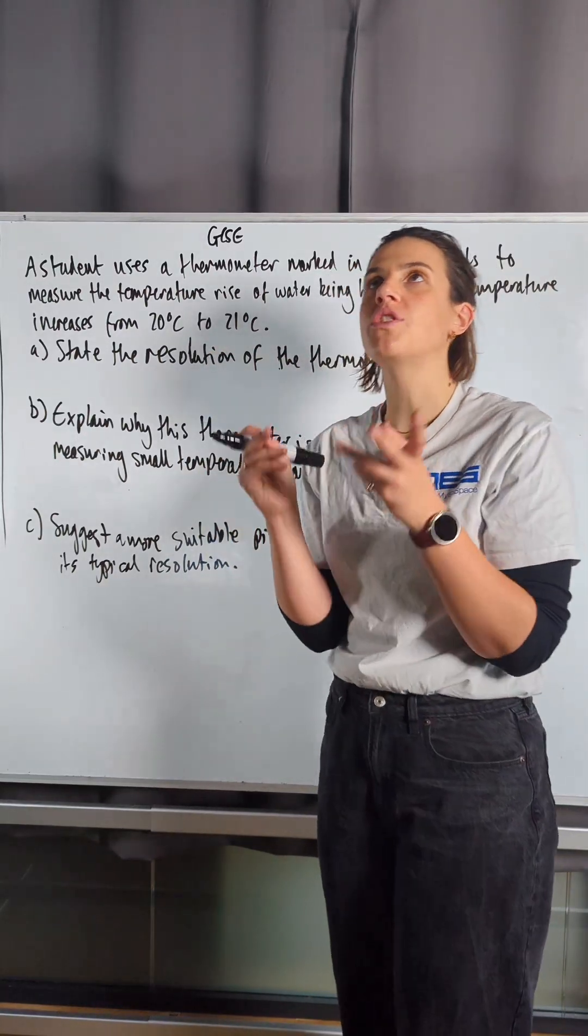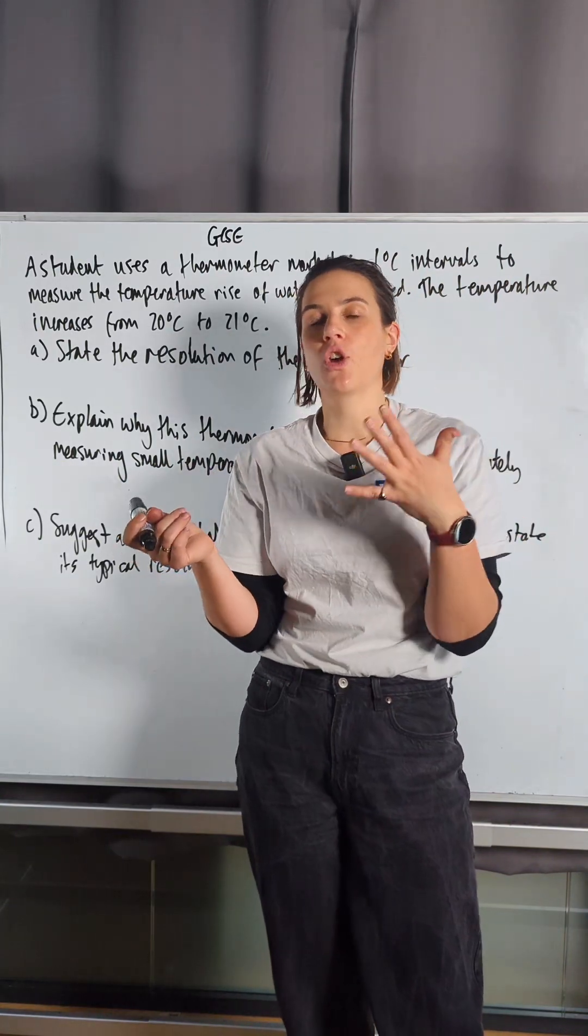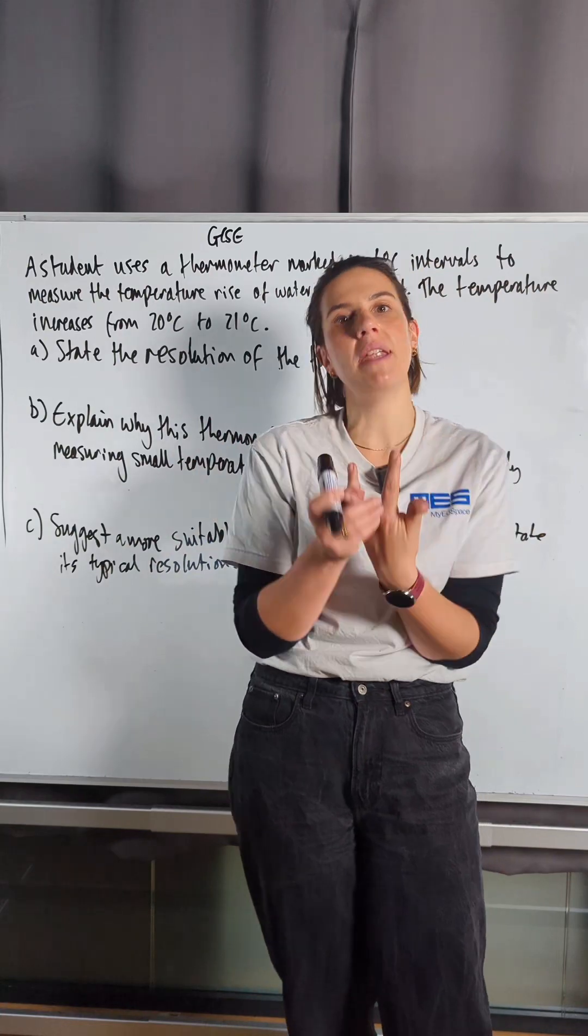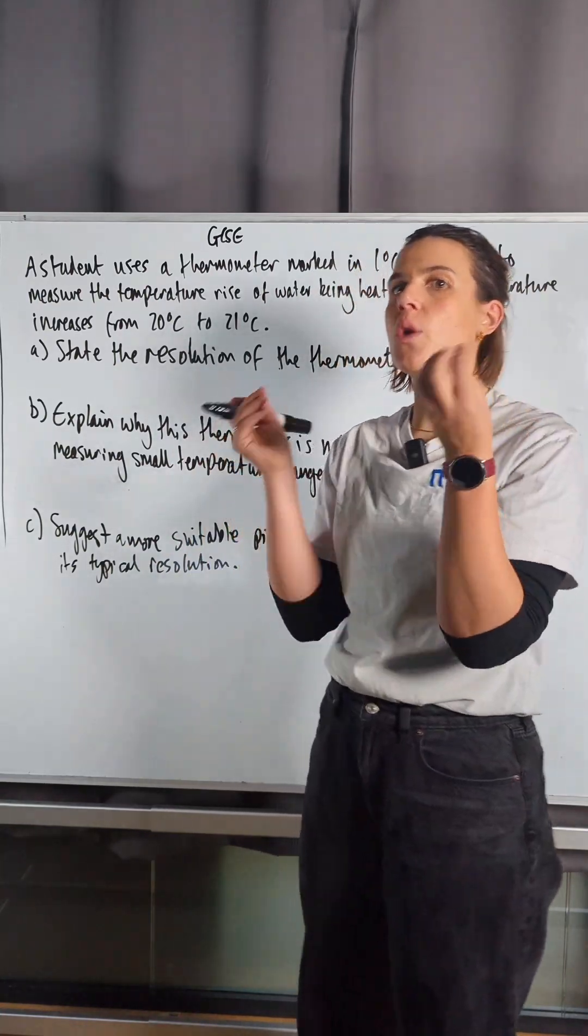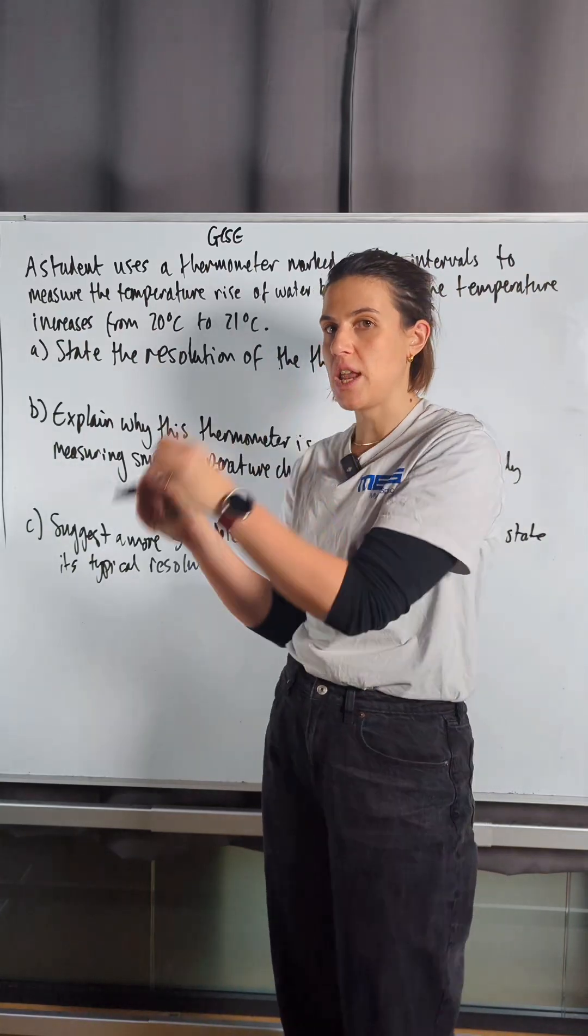The resolution is what it reads to the nearest. For example, if I'm using a clock, I can have a clock that has a resolution to the nearest millisecond, second, minute, or hour. It's what is the smallest thing that I can measure with this instrument.